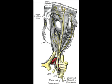It runs along the lateral wall of the cavernous sinus above the other orbital nerves, receiving in its course one or two filaments from the cavernous plexus of the sympathetic, and a communicating branch from the ophthalmic division of the trigeminal nerve.